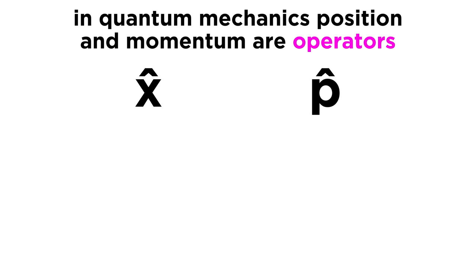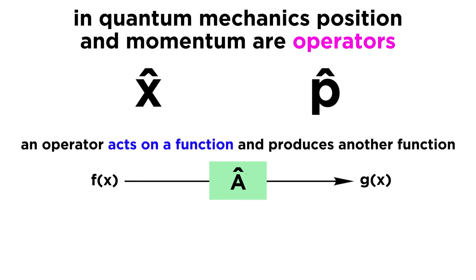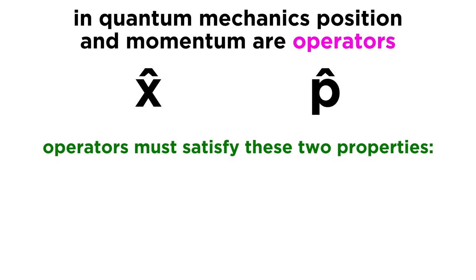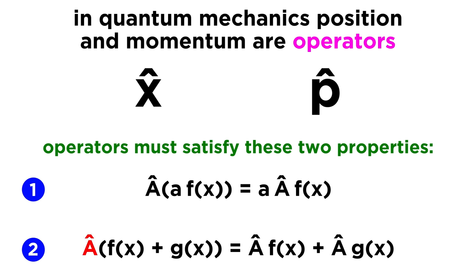Operators are mathematical objects that act upon functions, and result in the production of other functions as an output, similar to the way that functions act upon values to produce other values. Operators must satisfy the following two properties. First, operator A acting on the product of the constant A and the function f of x equals the constant A times the operator A acting on the function f of x. Second, operator A acting on the sum of functions f of x and g of x equals operator A acting on f of x plus operator A acting on g of x.